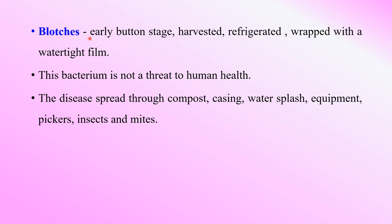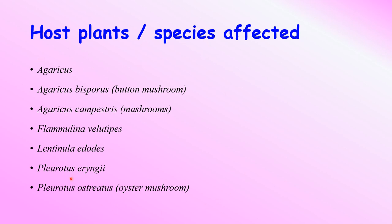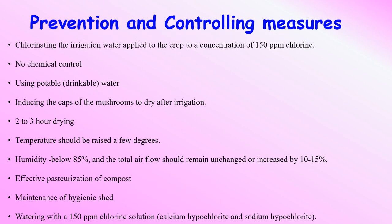It can start from the early button stage, during harvest, or during refrigerated storage. This bacterium is not a threat to human health. The disease spreads through compost, grazing water splash, equipment, insects, and mites. The mushrooms that act as host plants for bacterial blotch caused by Pseudomonas tolaasii include Agaricus bisporus (button mushroom), Agaricus campestris, Flammulina velutipes, Laetinella aerodes, Pleurotus eryngii, and Pleurotus ostreatus.